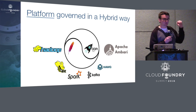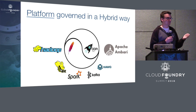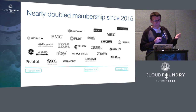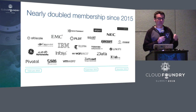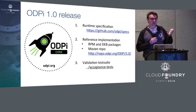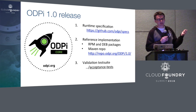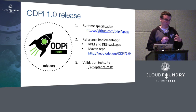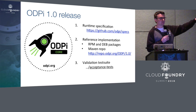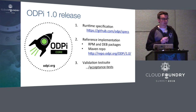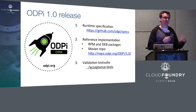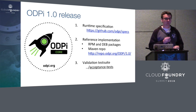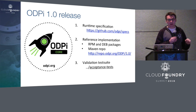ODPI is a very well-represented organization in terms of membership — we nearly doubled since 2015. Within less than a year of formal existence, we came up with a runtime specification for how the big data platform needs to interact with its applications. We also came up with a reference implementation of that specification. Today, that's a traditional view of delivering a big data solution: RPM and Debian packages, with Ambari or another orchestration solution to roll out a big data management cluster. It's a baseline.